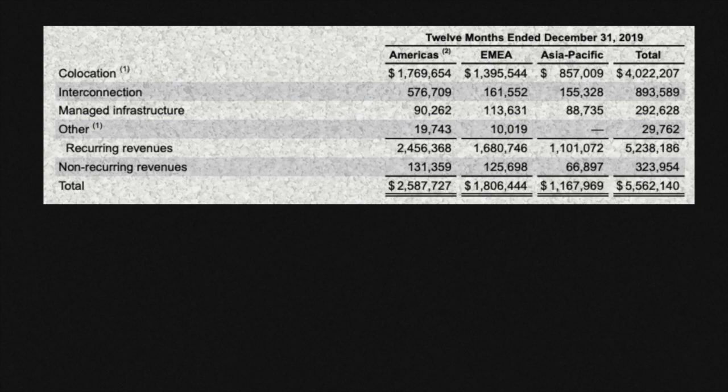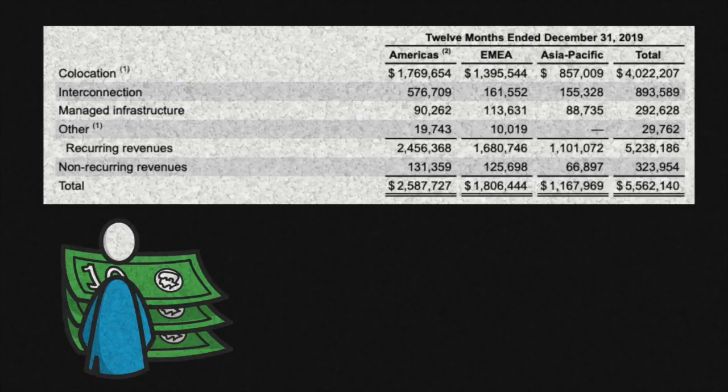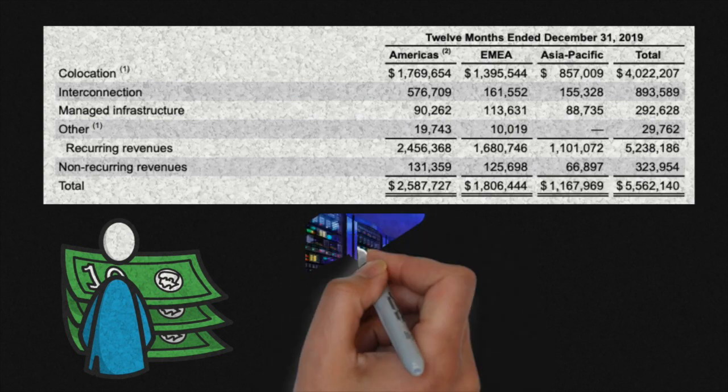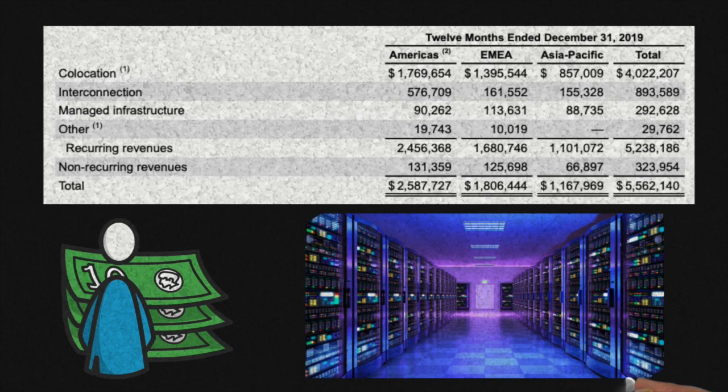Looking at its segments, the bulk of revenues come from co-location, which is basically businesses renting space for their servers and other computer hardware. And Equinix will be providing the building, the power, the bandwidth, the security as we previously mentioned, and cooling.